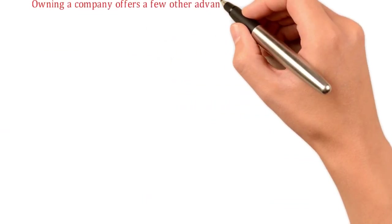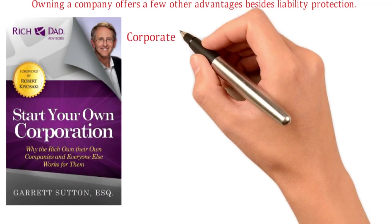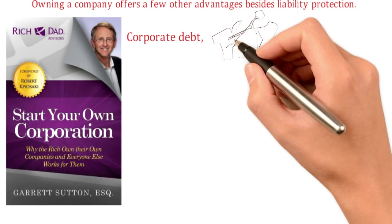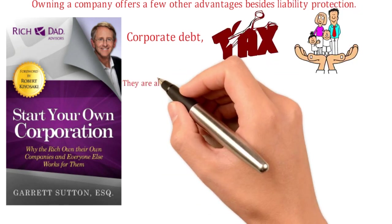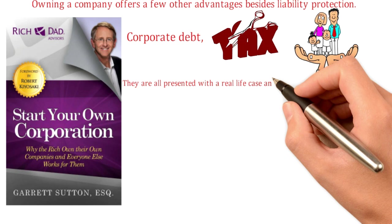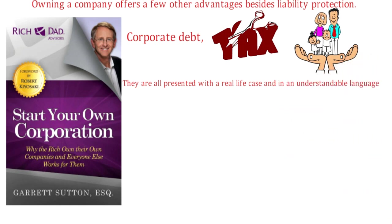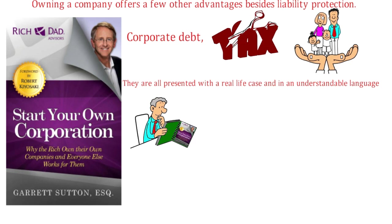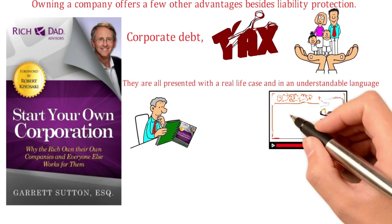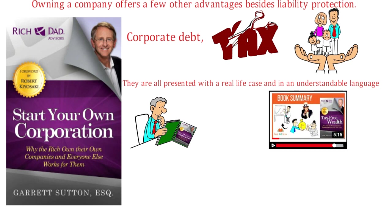Owning a company offers a few other advantages besides liability protection. The book covers the topics of corporate debt, business tax deductions, and insurance. They are all presented with real-life cases in understandable language so anybody can get more familiar with the topic. For more details about tax deductions, check out our summary of Tom Wheelwright's book Tax-Free Wealth, which is another jewel from the Rich Dad Advisor series.